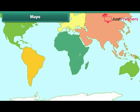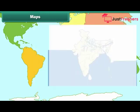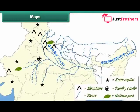A map represents some portion or all of Earth's surface diagrammatically. It shows countries of the world, their capitals, cities and towns. It also shows the various landforms and water bodies on Earth.